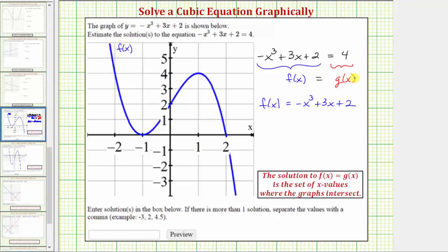We also need to graph g of x where g of x equals the constant four. So we should recognize g of x equals four as a constant function and therefore the graph is a horizontal line passing through the vertical axis at four.